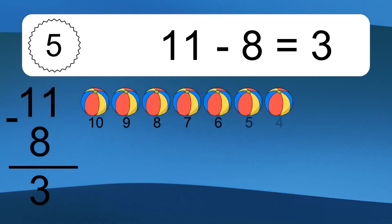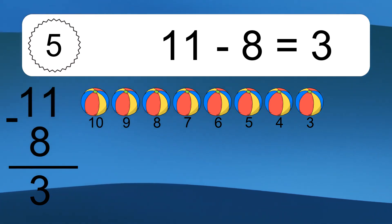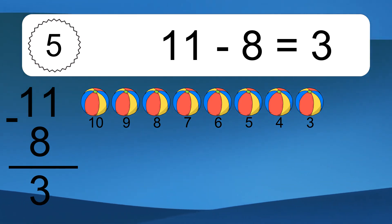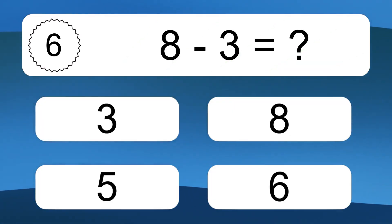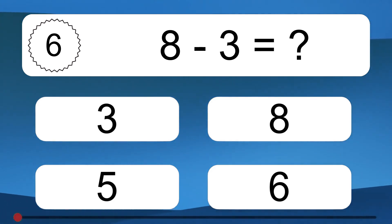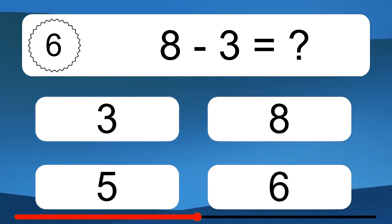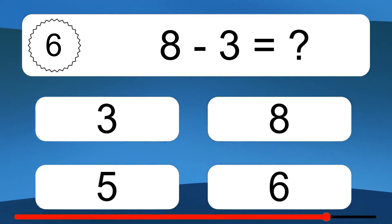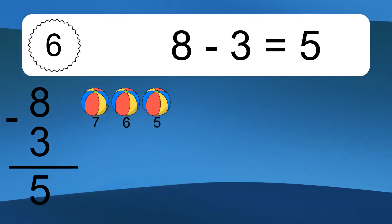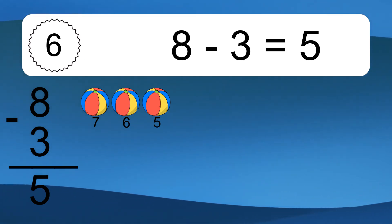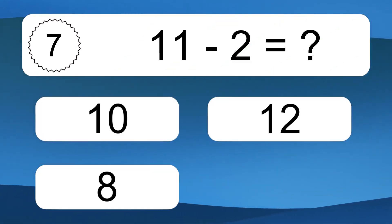Eleven minus eight equals what? Eleven minus eight equals three. Let's count it: ten, nine, eight, seven, six, five, four, three. Eight minus three equals what? Eight minus three equals five. Let's count it: seven, six, five.